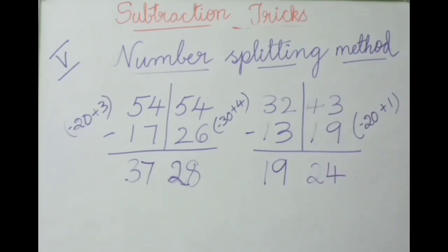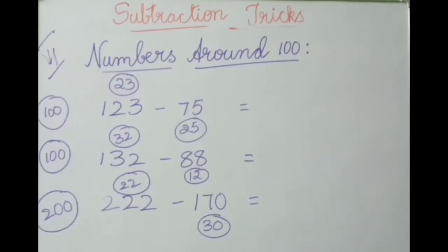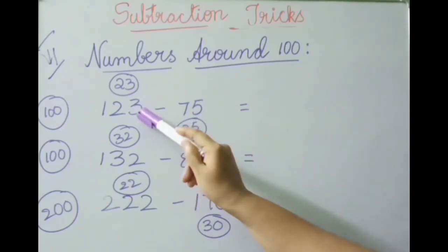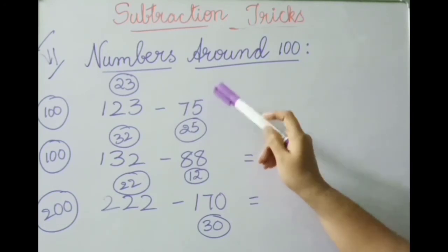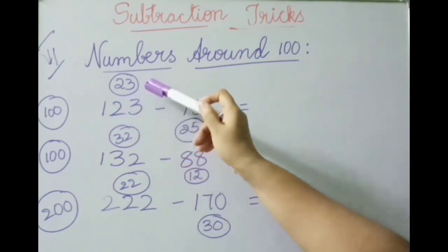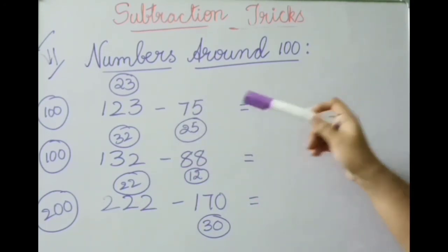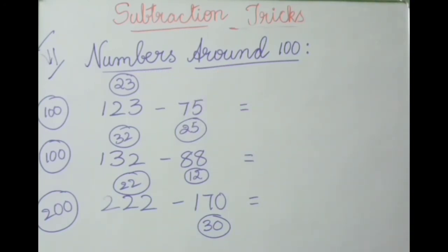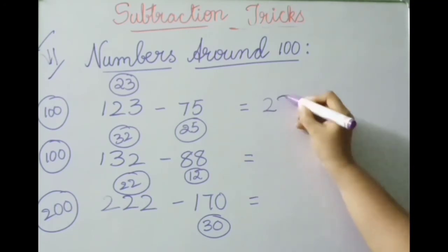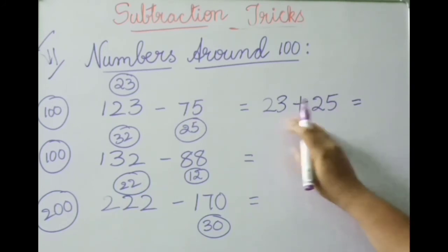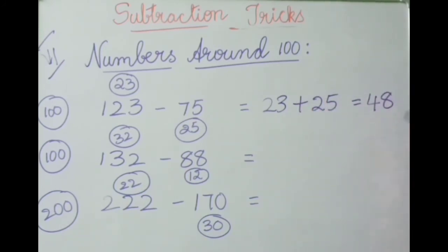See the last method: how to subtract numbers that are around 100. First example: one hundred twenty-three minus seventy-five. One hundred twenty-three is twenty-three above one hundred. Seventy-five is twenty-five below one hundred. When we add these two distances the subtraction is completed: twenty-three plus twenty-five — twenty plus twenty is forty, three plus five is eight. The answer is forty-eight.